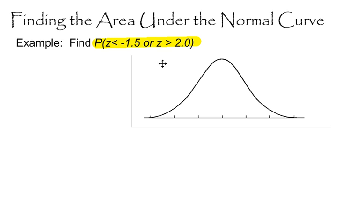So in this case, I want to find what is the probability that z is less than negative 1.5 or z is greater than 2.0. So I'm actually showing you two things here: a new notation, probability notation, for finding the area under a normal curve, and I'm also showing you how to find the area if we've got an or situation.